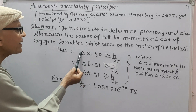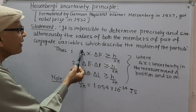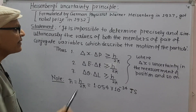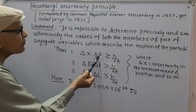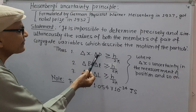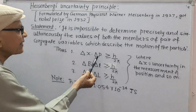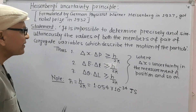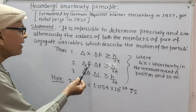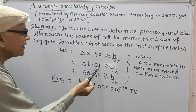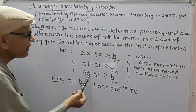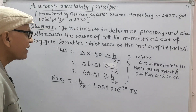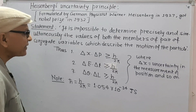Here Δx represents the uncertainty in the measurement of position, and Δp represents the uncertainty in the measurement of linear momentum. E is energy, t is time, θ is angular displacement, and L is angular momentum.